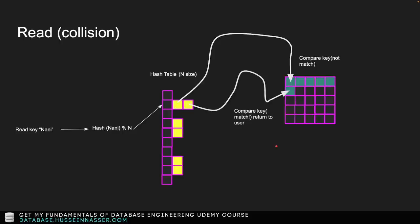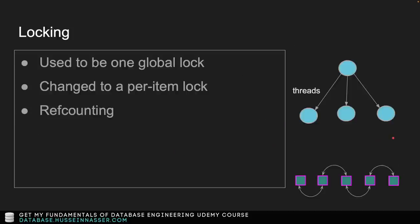There's also reference counting — every time you read an item, you increment a ref count, and when you release it you decrement it. This is for application-level garbage collection. Even though Memcached is written in C with no GC, the LRU crawler cannot remove an item if someone is currently referencing it — that would be a memory leak.